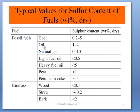Oil has 1 to 4 percent sulfur content, and natural gas has 0 to 10 percent. When we burn or combust any of these materials, the sulfur content is converted to SO2 and then SO3, meaning combustion of these sulfur-containing materials generates more air pollution.